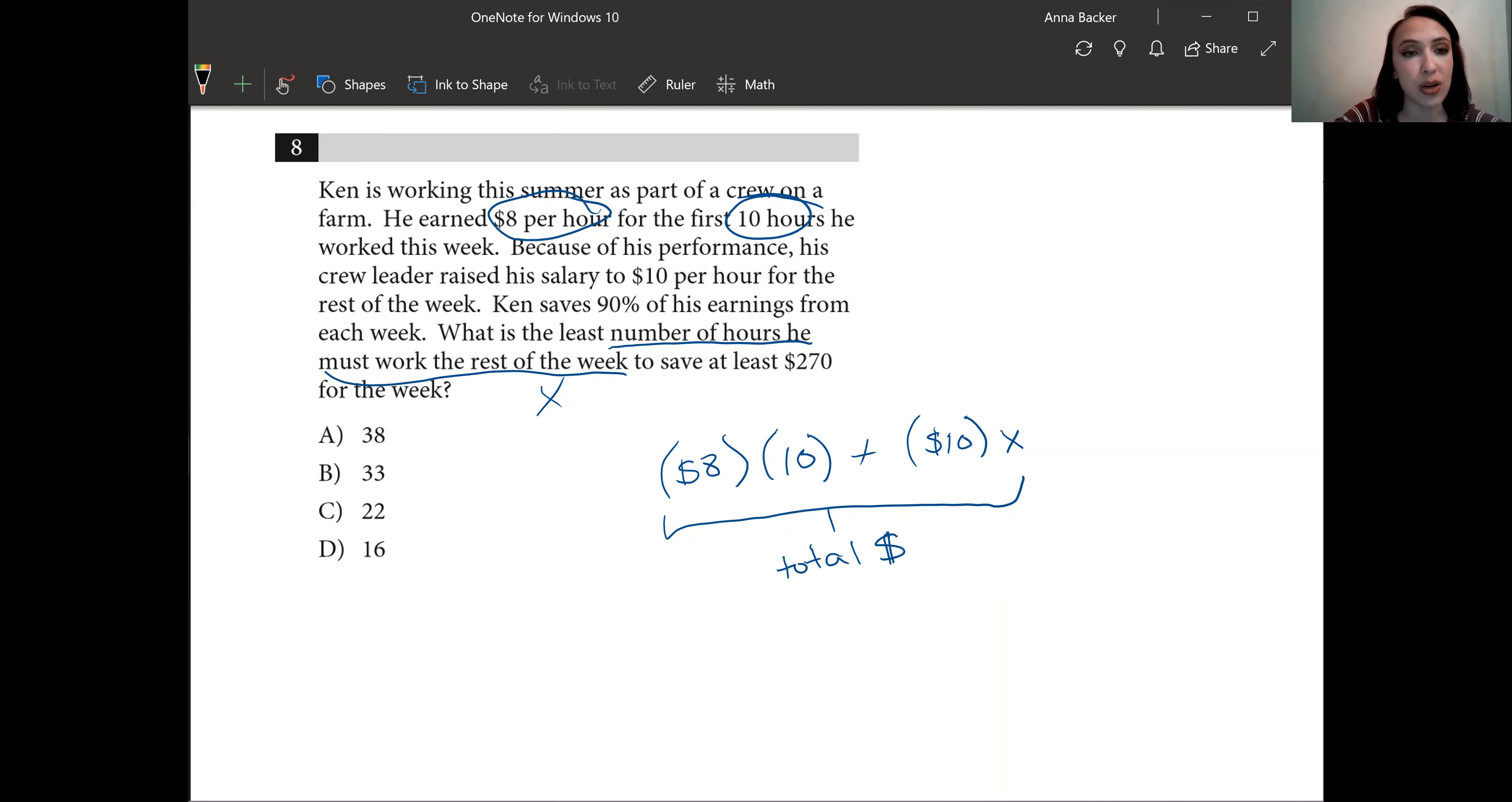Let's keep working through our question. Ken saves 90% of his earnings from each week. Now we know that's going to have to equal ultimately what he is saving, $270. In order to consider this as the 90% that he's saving, we're going to multiply his total money by the percent he saved, which I'm going to write as a decimal as 0.9.